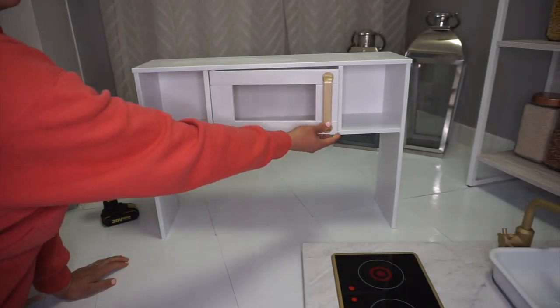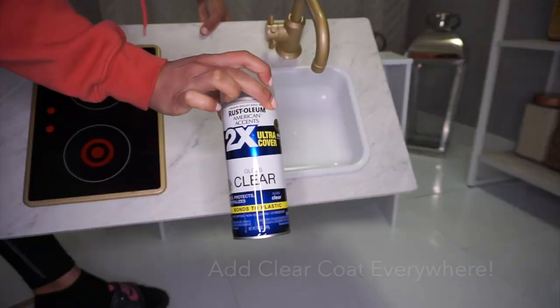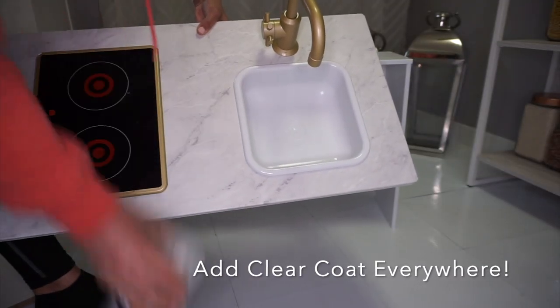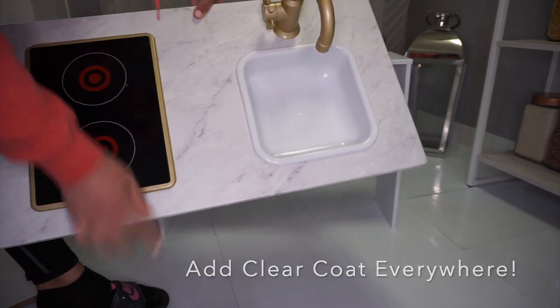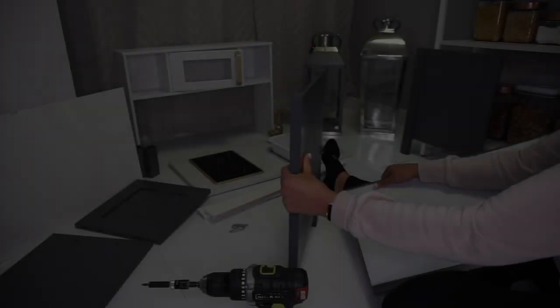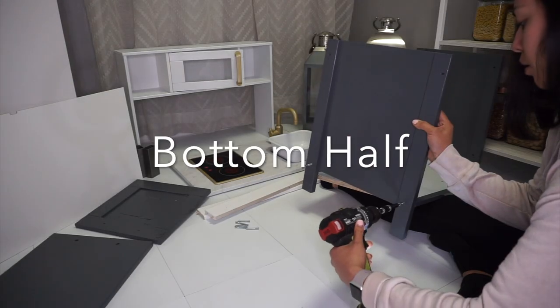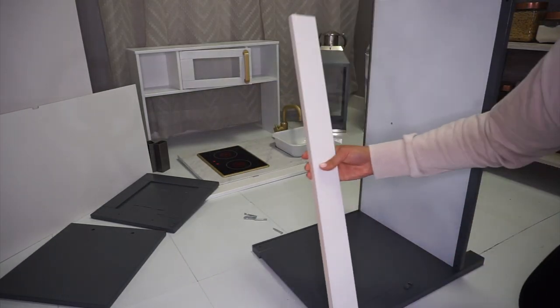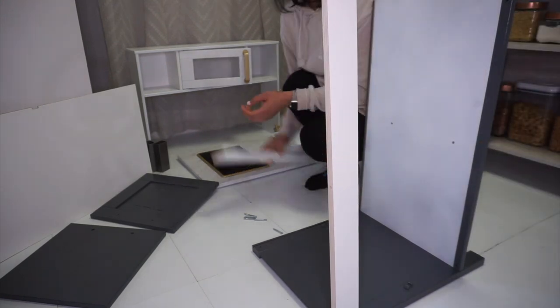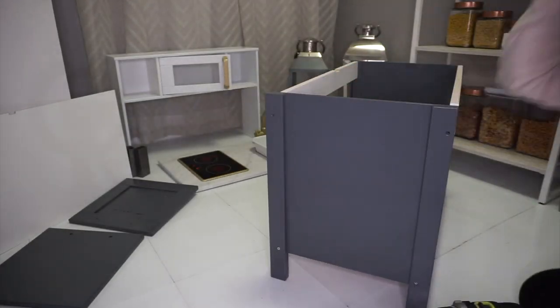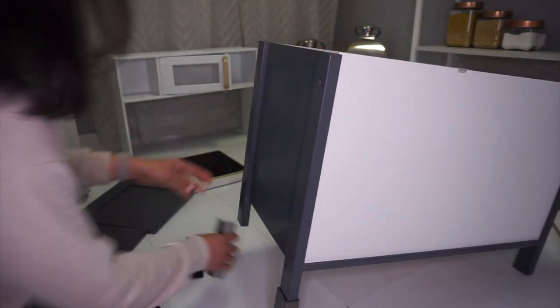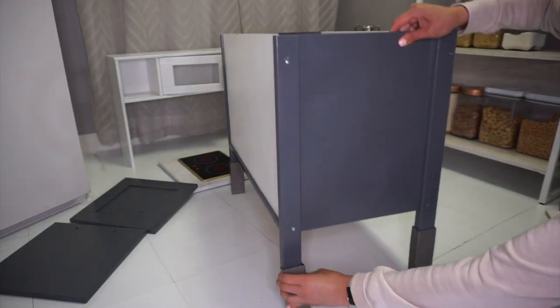I also added on the faucet, the sink, and the sides of the stove. The only thing I didn't spray paint were these bottom insert shoes.